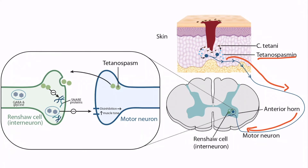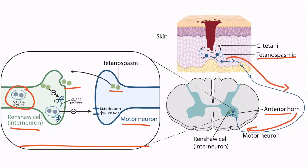From the image, notice that a cross-section of the spinal cord is shown, and right at the anterior horn, you can see the motor neuron and interneuron. Here is the motor neuron, and here is the interneuron. The interneuron is also known as a Renshaw cell. Once the toxin reaches the anterior horn, it travels from the motor neuron to the Renshaw cell. Notice that within the Renshaw cell are vesicles containing the neurotransmitters GABA and glycine. These vesicles normally interact with snare proteins, which you can see right here. The snare proteins are responsible for releasing GABA and glycine into the synapse, where the neurotransmitters can then inhibit the motor neuron.